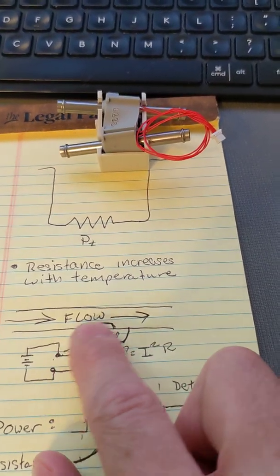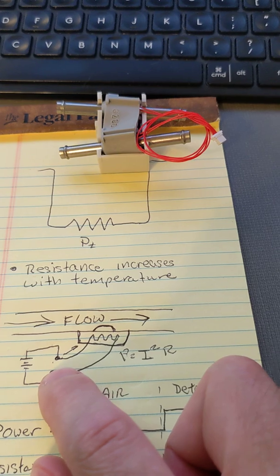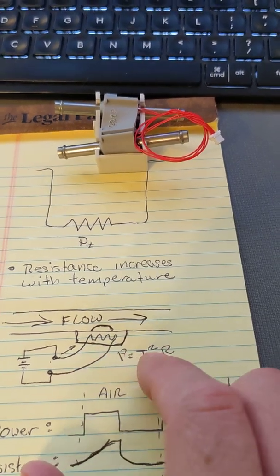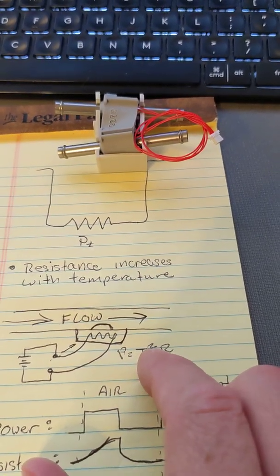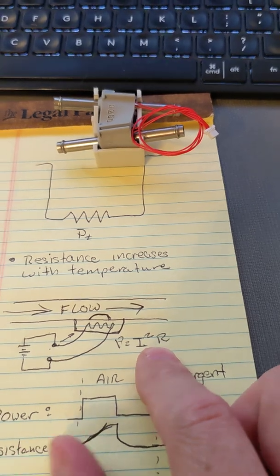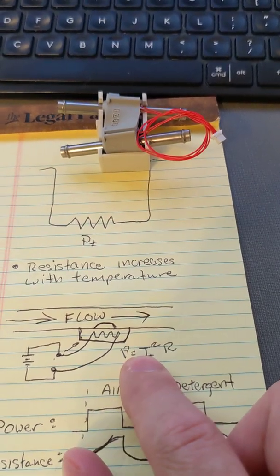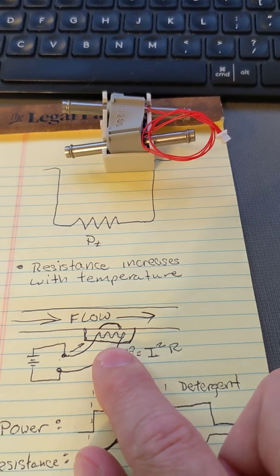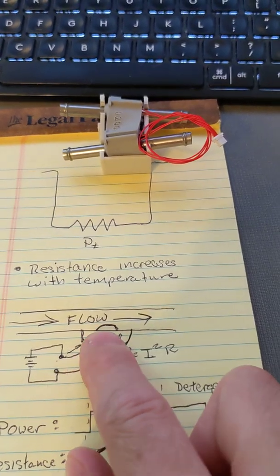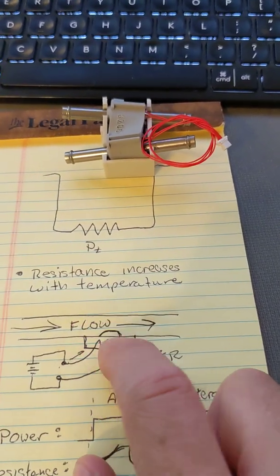Power is related to the current squared times the resistance. So if we want to increase the power here in watts, we can raise the current flowing through here. The resistance is set by the material property, so that's going to be constant. But we can increase the power by increasing the current until we increase it so much that we burn it out.